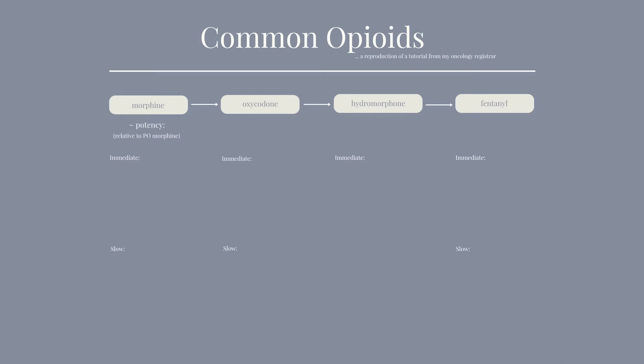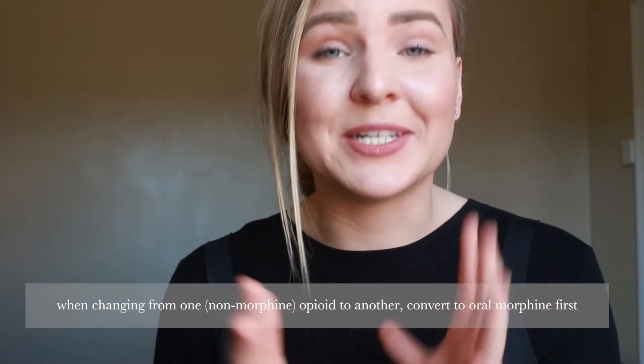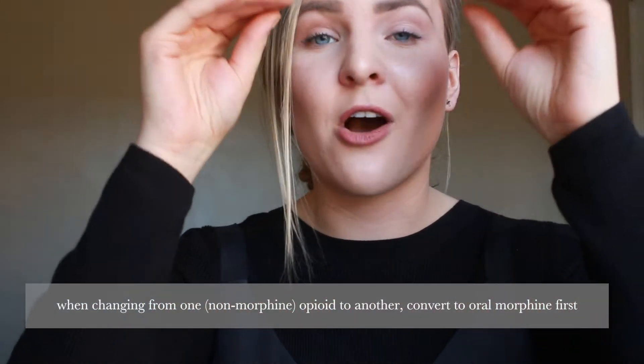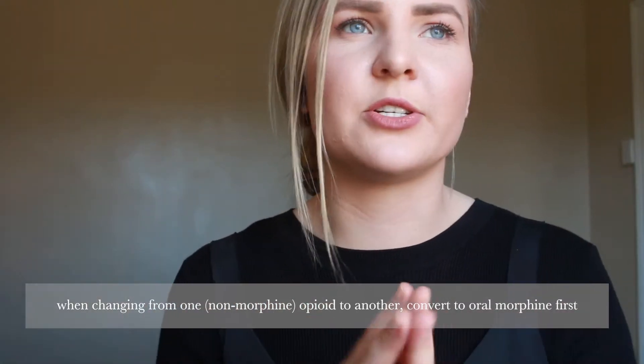We usually use morphine as our comparative base. Oral oxycodone is approximately 1.5 times the potency of oral morphine. Oral hydromorphone is about five times the strength of oral morphine. IV fentanyl is about a hundred times the strength of oral morphine - we compare oral morphine to IV fentanyl because fentanyl doesn't actually come in an oral form. These equivalent dosages and opioid conversions are really important.